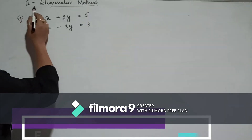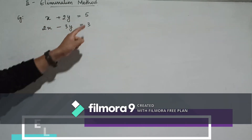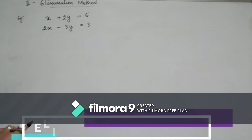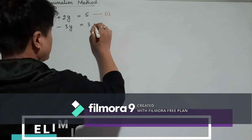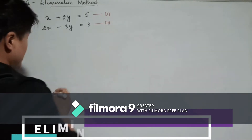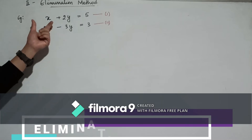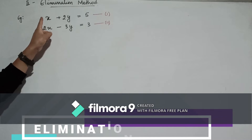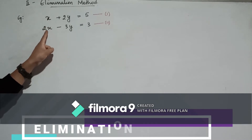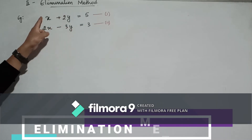The second method is the elimination method. The example here is: x plus 2y equals 5 and 2x minus 3y equals 3. I keep this as equation 1 and this as equation 2. Here we have to eliminate a variable. The coefficients of x are 1 in equation 1 and 2 in equation 2. We have to make the coefficients equal.